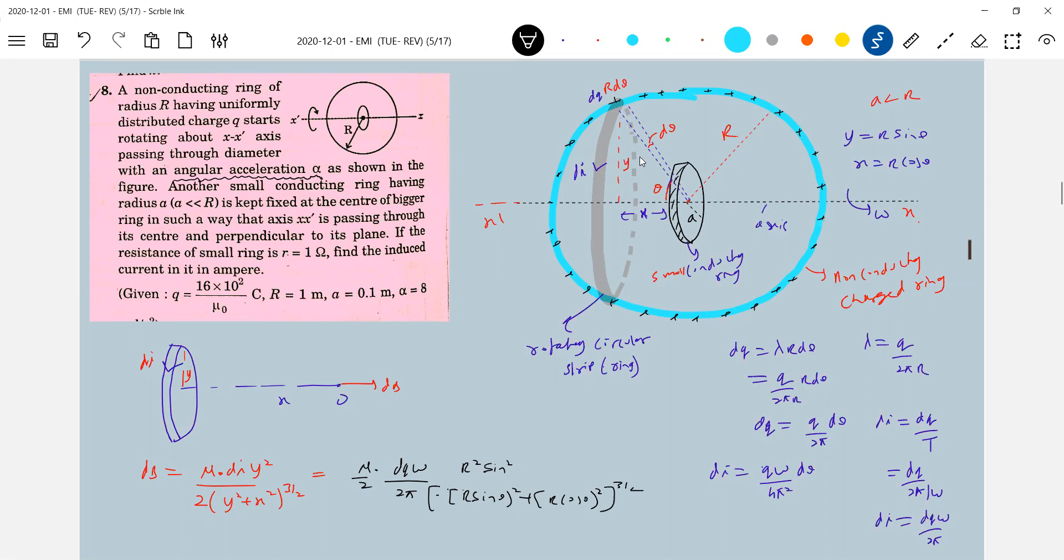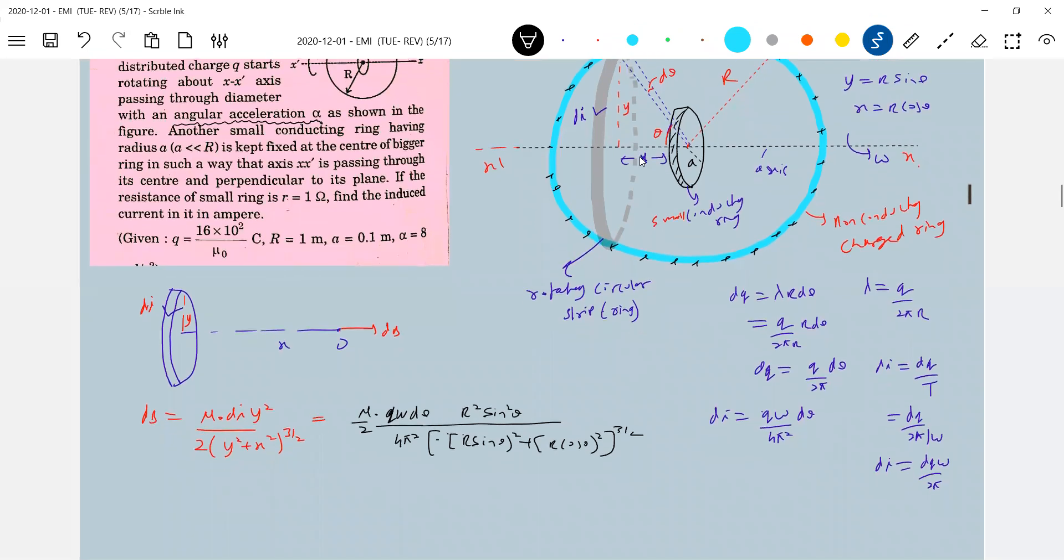Three by two, what is y square? y square will be r square. di is q omega d theta by four pi r square. So here in r cube will be there, r square, so one four pi r square will come. The dB equal to mu naught q omega, 8 pi square r. Check it, am I right? Just verify it.